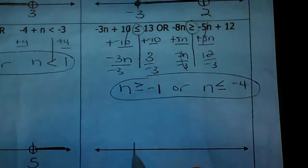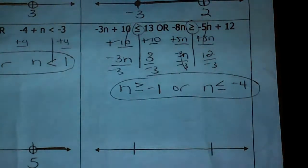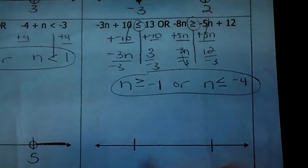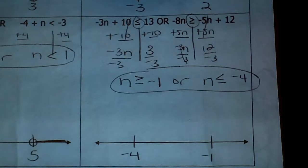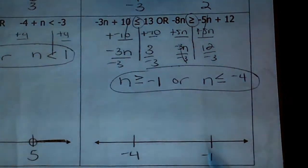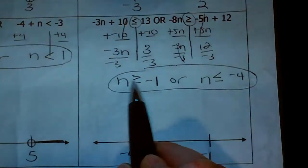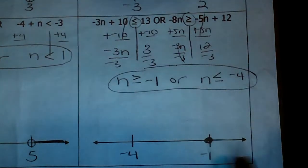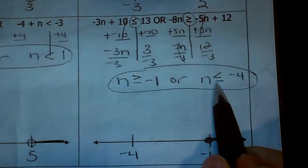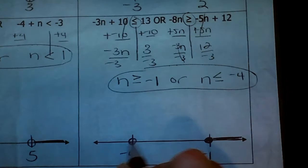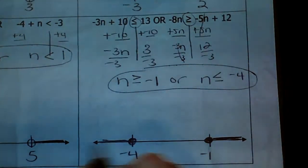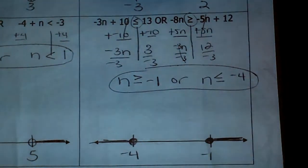To graph this: put the lower value on the left — remember, with negatives, the higher the digit, the lower the value, so negative 4 goes on the left and negative 1 on the right. n is greater than or equal to negative 1 — close that circle and shade right. n is less than or equal to negative 4 — close that circle and shade left. They're pointing outward just like the oars of a boat.